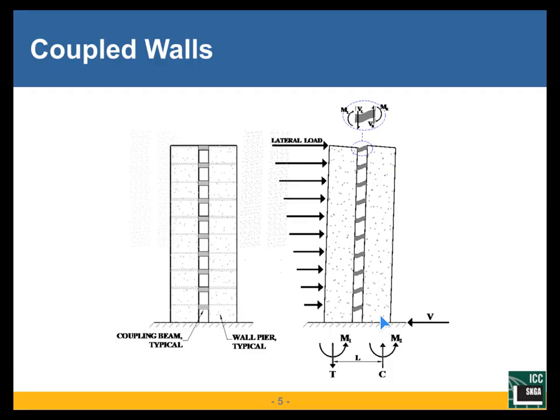By proper design where we make the coupling beams kind of weak, we can absorb a lot of earthquake energy, or we can absorb damage that may be caused by an earthquake in the coupling beams, sparing the shear walls from damage well into the earthquake excitation. That makes this system pretty attractive in seismic applications, and in Japan and New Zealand, these systems are treated more favorably than isolated walls.